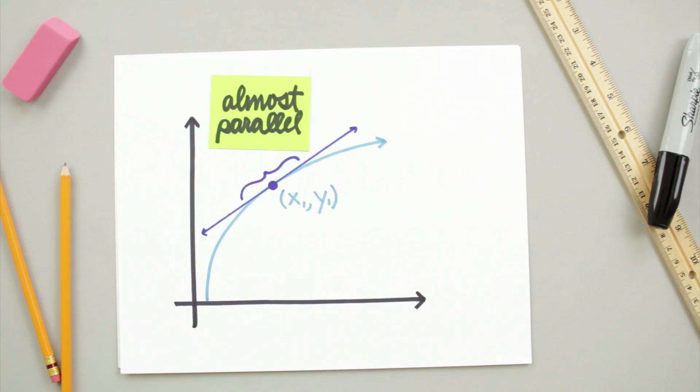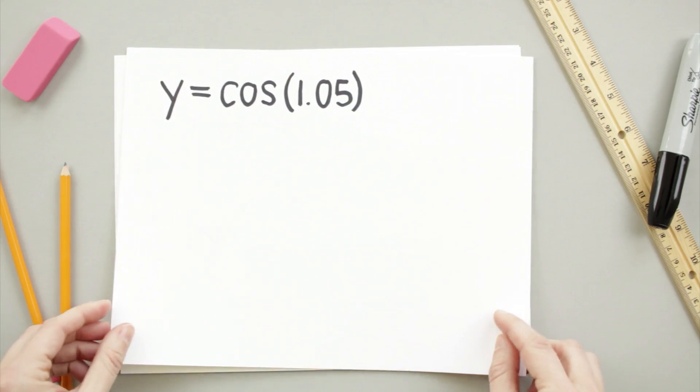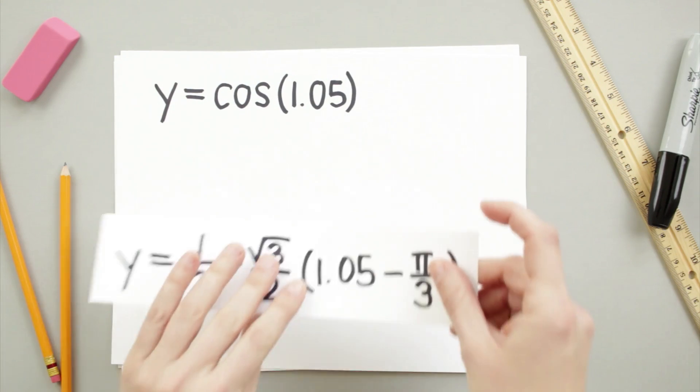This is really useful in cases where the function we're dealing with is especially complicated, and finding the y value of a given x value proves to be a difficult process. For example, it can take this equation and turn it into this equation.